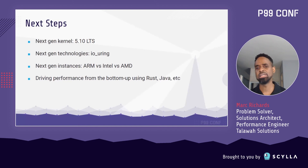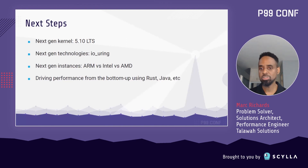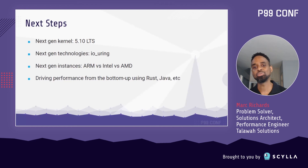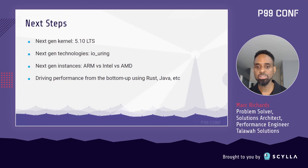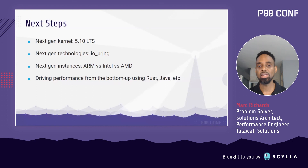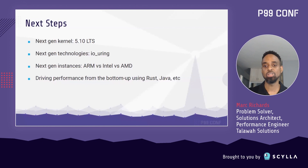I'm also really interested in the concept of driving performance from the bottom up — the idea that we start with a super simple, high-performance implementation like this one, and then gradually add features while trying to maintain performance. So if we're using Rust, for example, we could start with a low-level Libreactor clone, then move up a level to a framework like Tokio, and then move up again to something like Hyper, while trying to see how much performance we can preserve as we move up in complexity.